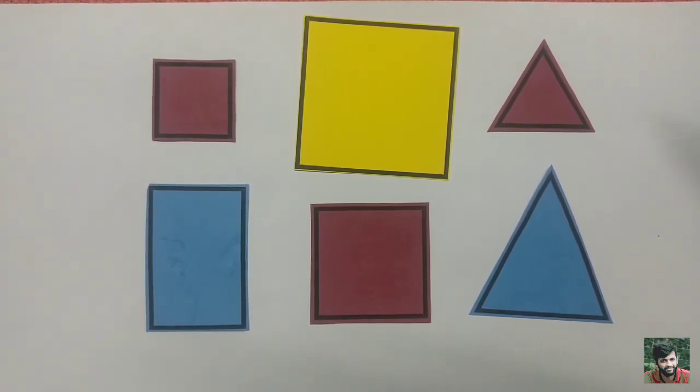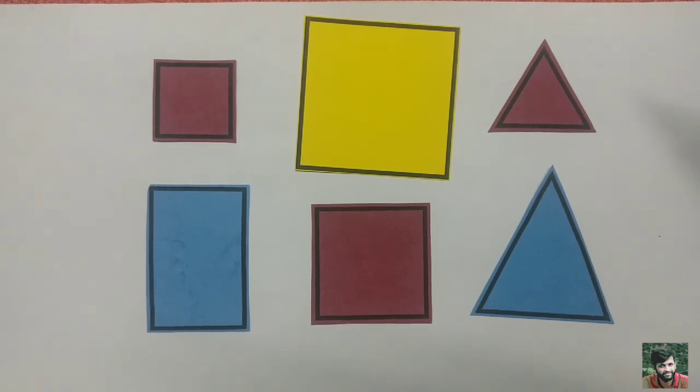So I can say two figures, if they are congruent, then definitely they are similar. It is not true vice versa. That means two figures, if they are similar, they need not be congruent.